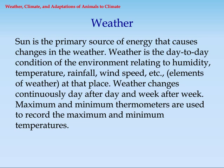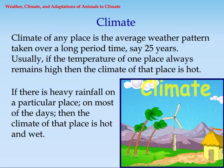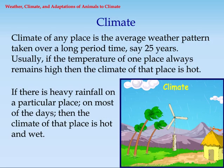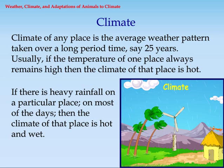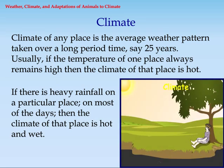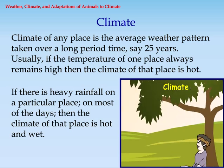Maximum and minimum thermometers are used to record the maximum and minimum temperatures. Climate of any place is the average weather pattern taken over a long period of time, say 25 years. Usually, if the temperature of one place always remains high, then the climate of that place is hot. If there is heavy rainfall at a particular place on most of the days, then the climate of that place is hot and wet.